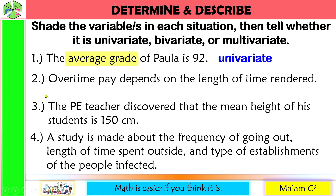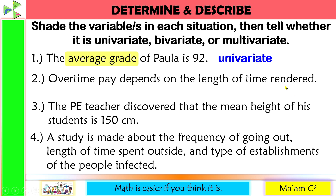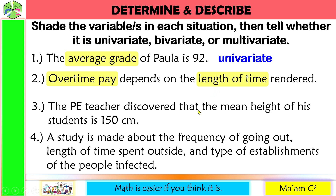Number two: overtime pay depends on the length of time rendered. What could vary here? The overtime pay and the length of time. We have two variables here, so this is bivariate.